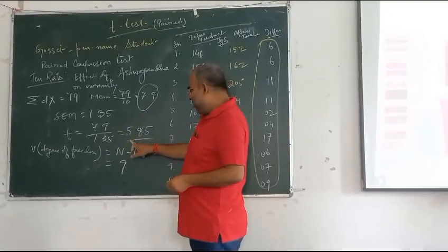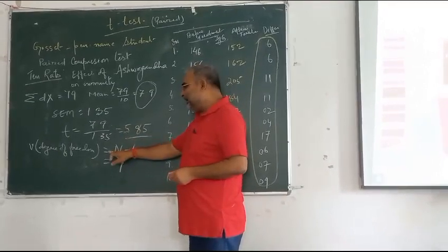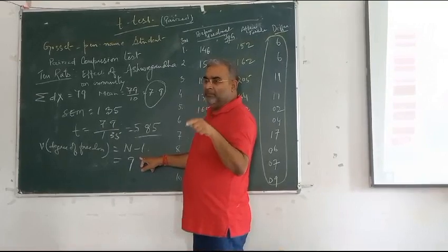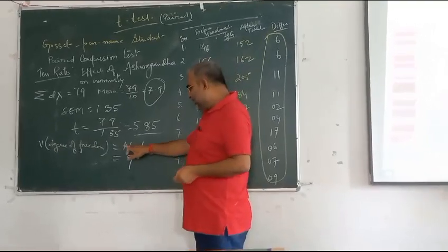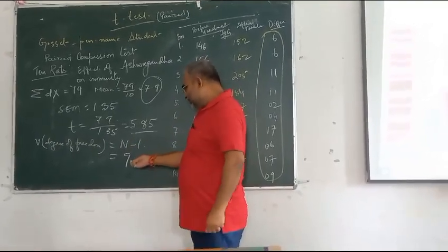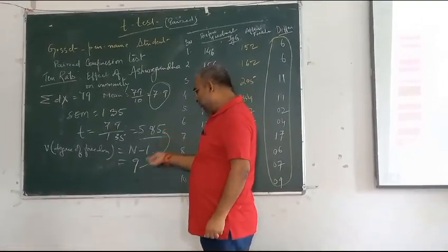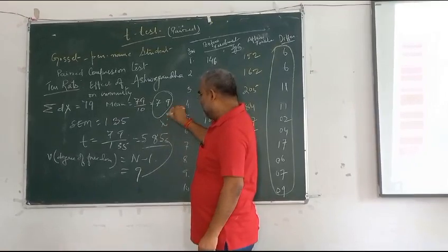And therefore, you determine the degree of freedom by the total number minus 1. And therefore, you analyze the degree of significance with respect to the degree of freedom from the t-table.